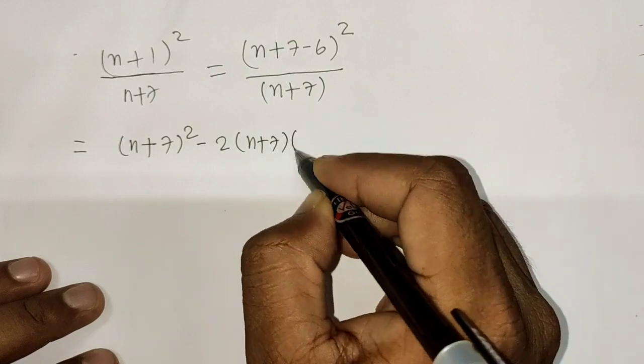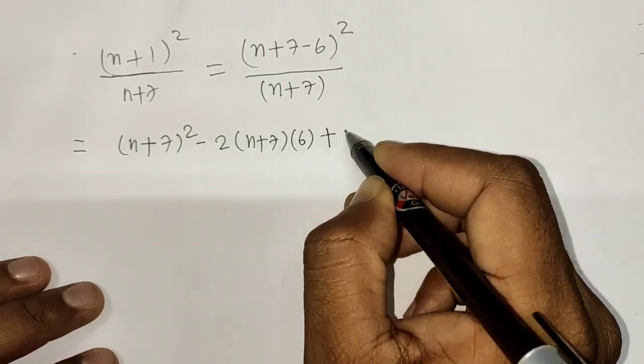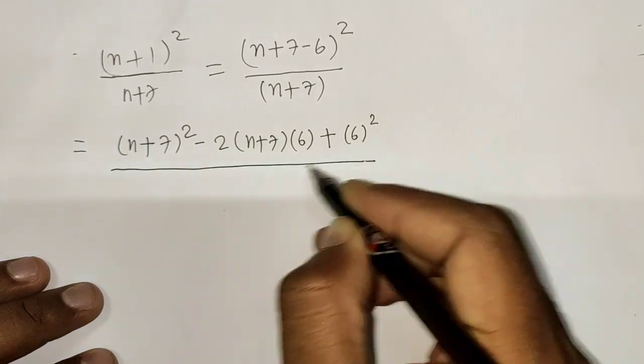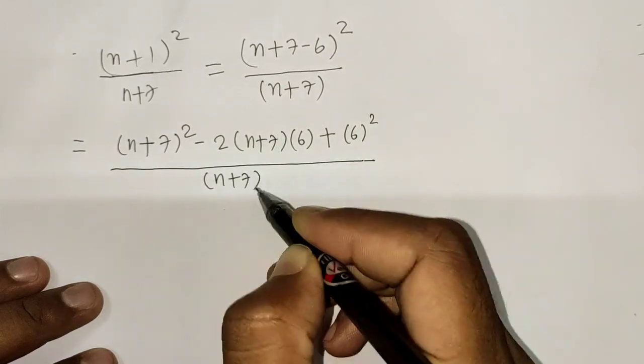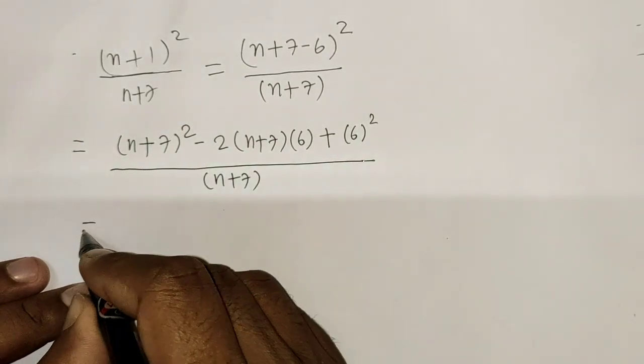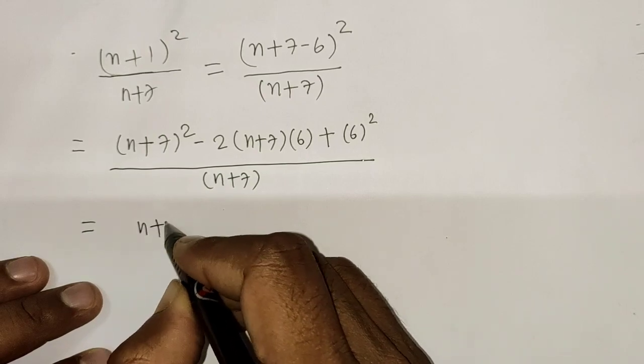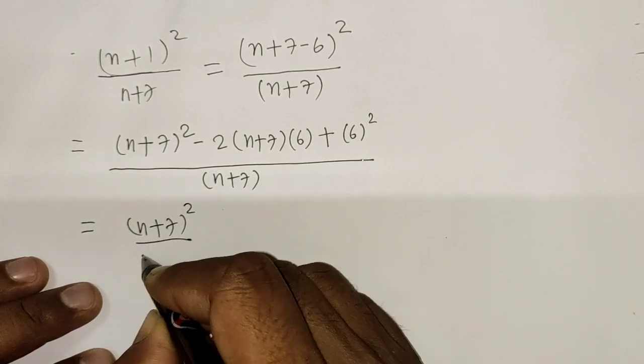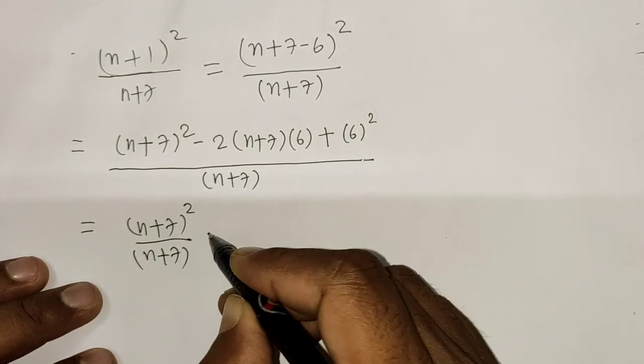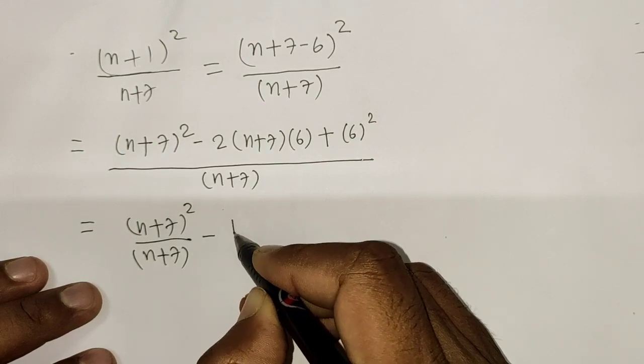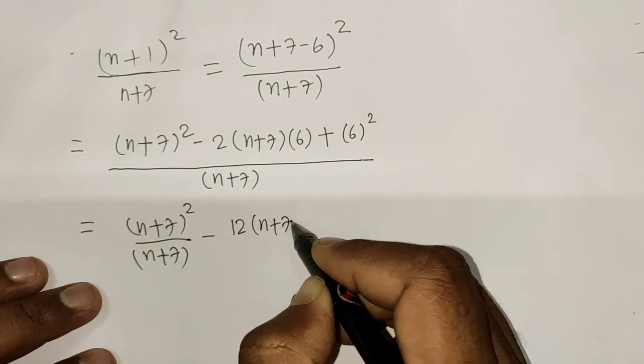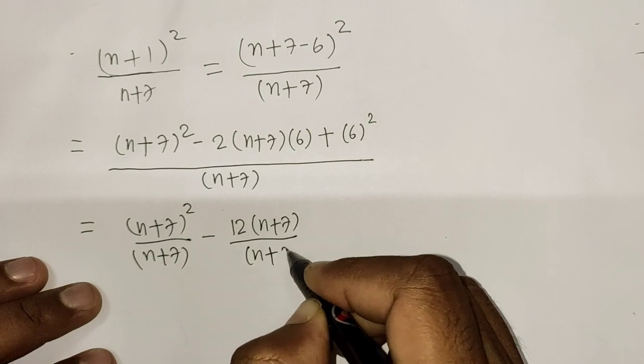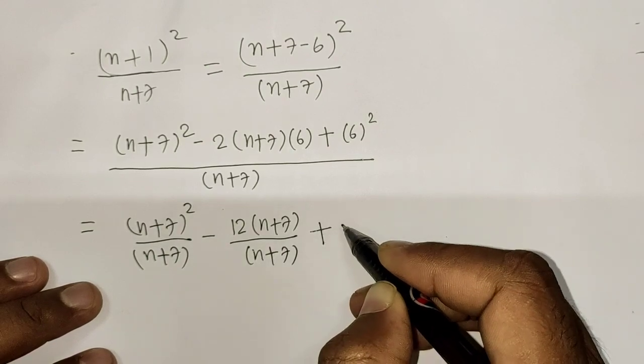And next you know what to do. Let's divide with the denominator. So this is (n+7)²/(n+7) minus this is 12(n+7)/(n+7) plus 36/(n+7).